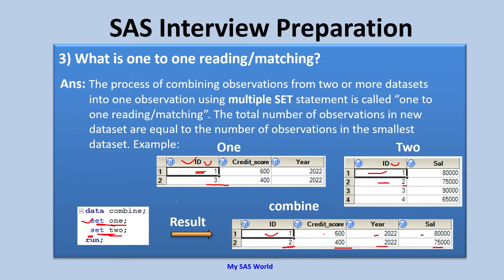When the program tries to read the third observation from dataset 1, there is no third observation — EOF, which stands for End of File Marker, arrives. Once EOF arrives, the data step terminates. Since the output statement is invisible, nothing is added for that iteration, and the second set statement is not executed. That is why only two observations are written to the final output dataset, and the remaining two observations from dataset 2 are not processed.